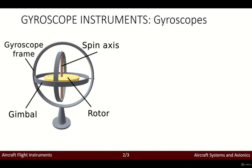Gyroscopes are used to keep track of how an aircraft is moving with respect to an initial orientation. For instance, throughout the acceleration phase during takeoff the aircraft will only be moving forward but does not rotate. It is at the moment of takeoff, when the aircraft starts moving upward, that the aircraft will rotate with respect to the initial horizontal direction. In this case we require gyroscopes to visualize how much the aircraft is actually rotating.